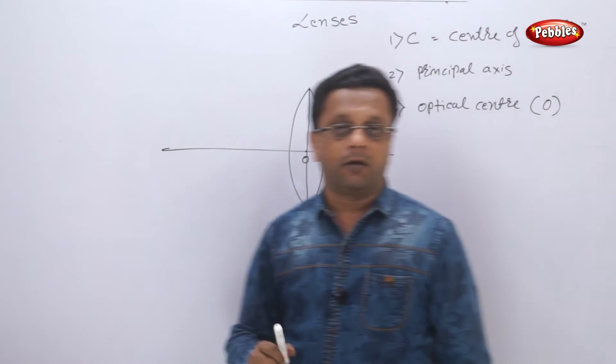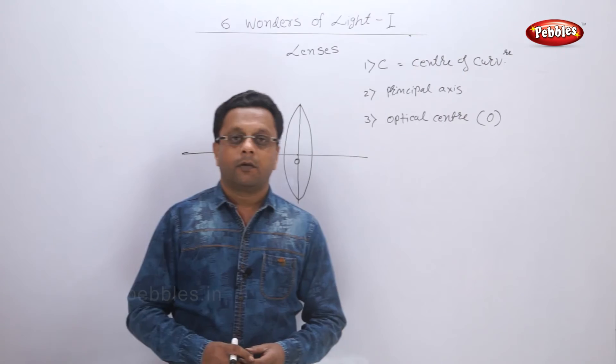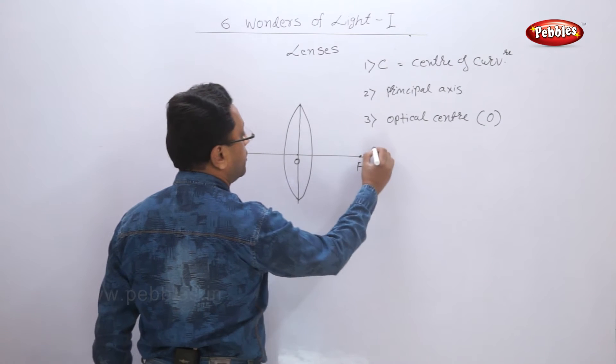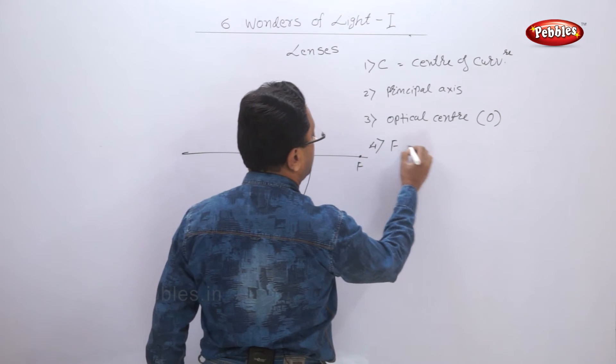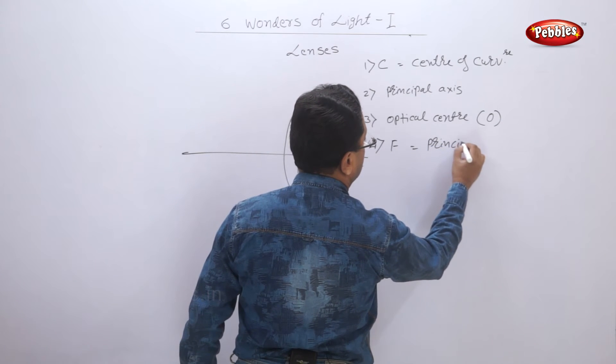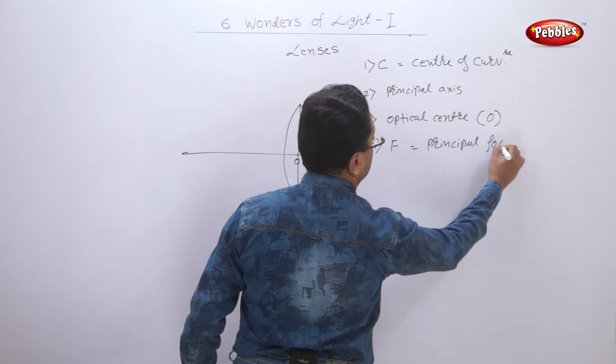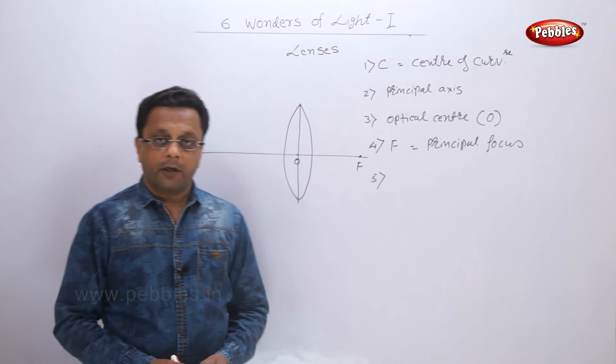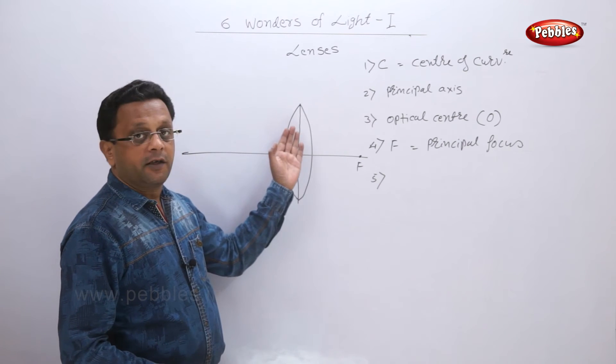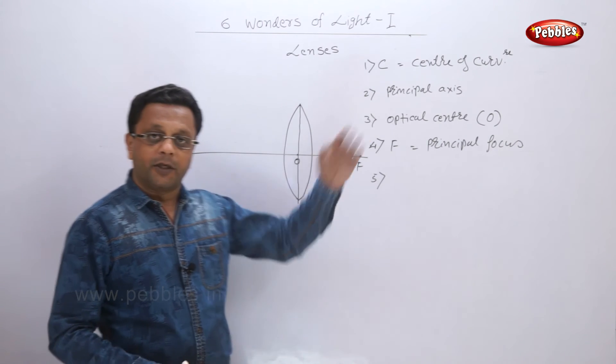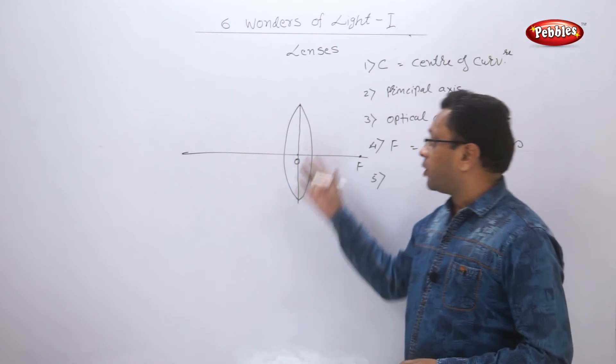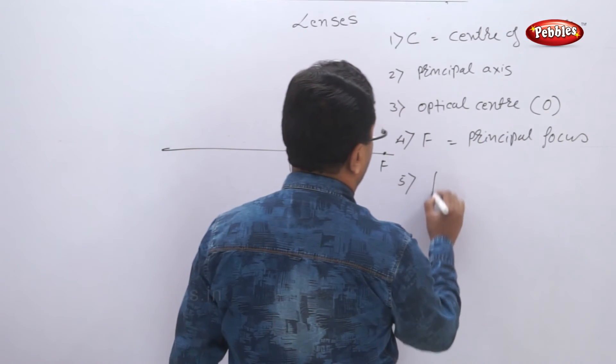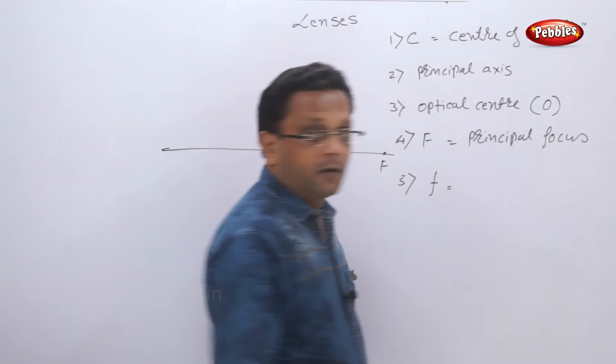Now the principal focus - suppose this is if F is principal focus. Whenever the incident rays are there, they will pass through the principal focus. Since this lens is made up of two parts, we have two foci. At last we have F, focal distance. This is nothing but the distance between the focus and origin.